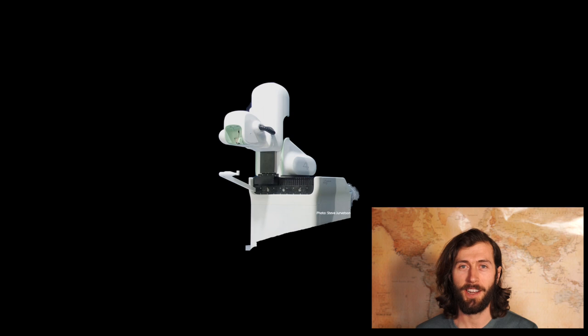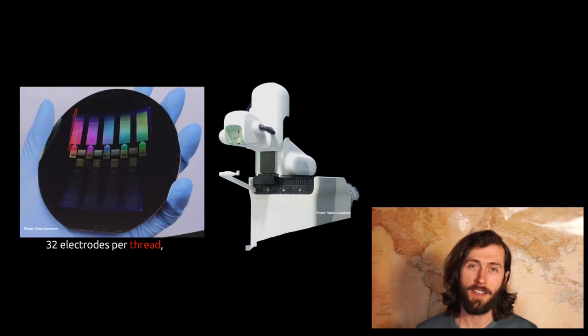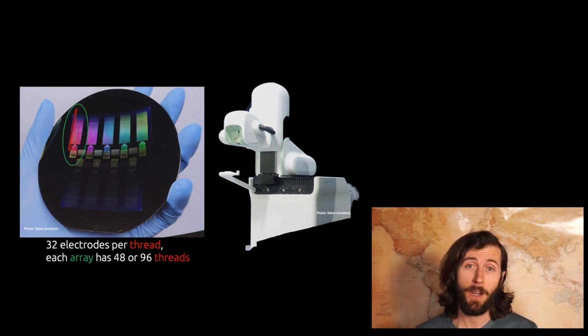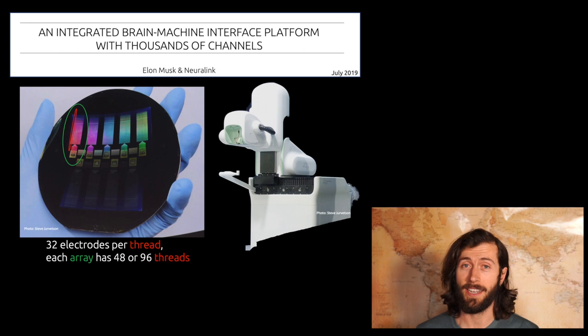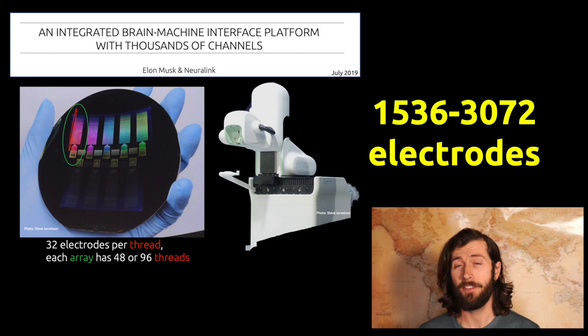We know all about the sewing machine, but what about the electrodes? Each one of these threads contains about 32 electrodes, and each array has 48 to 96 threads. You can read all about it in their 2019 paper. That's 1,500 to 3,000 electrodes. It's a ton of electrodes.